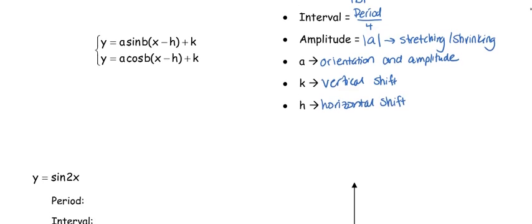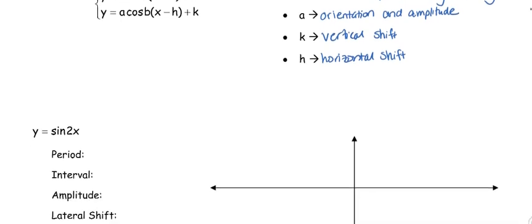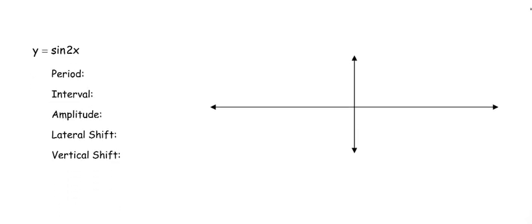So the same general form that we saw yesterday: you've got your a, your b comes before multiplying by the x. Horizontal is always inside the parentheses, vertical always outside the parentheses. If you haven't already, go back and remind yourself the general form of sine and the general form of cosine. It is really important that you know what sine and cosine look like differently without any transformations.